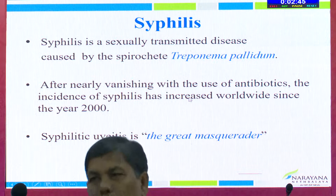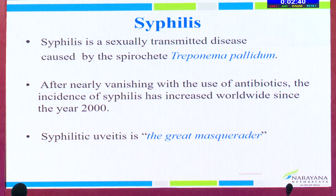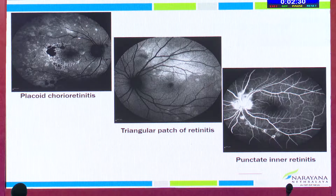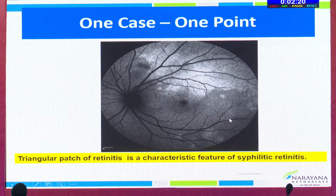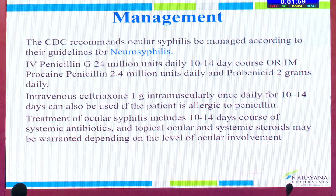The SD-OCT shows the outer retinal changes. Syphilis is a sexually transmitted disease caused by Treponema pallidum — it's a great masquerade. With increasing HIV, we are seeing more cases nowadays. The classical presentations include focal, multifocal, or diffuse retinitis. The classically described patterns are placoid chorioretinitis, a triangular patch of retinitis, and punctate inner retinitis. In this case, the triangular patch of retinitis gave me a clue to suspect syphilis. Both non-treponemal and treponemal tests should be ordered, and we should treat this case as neurosyphilis.